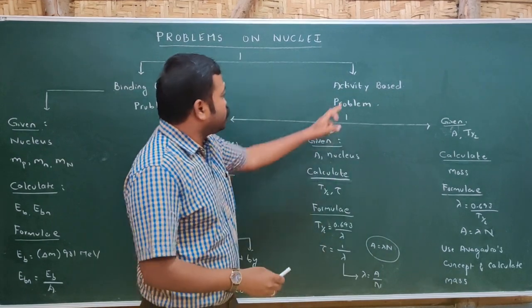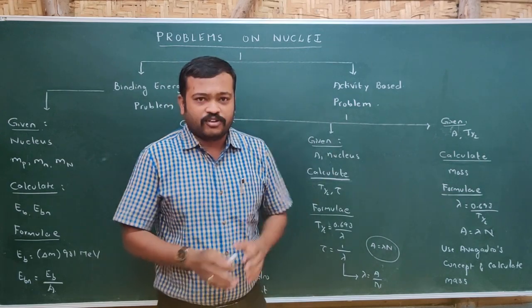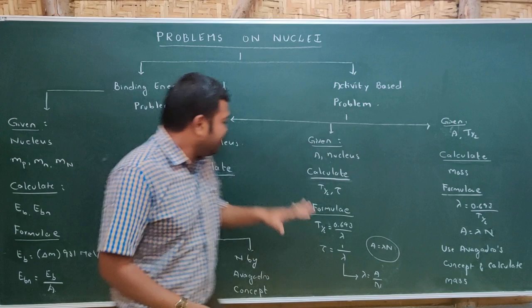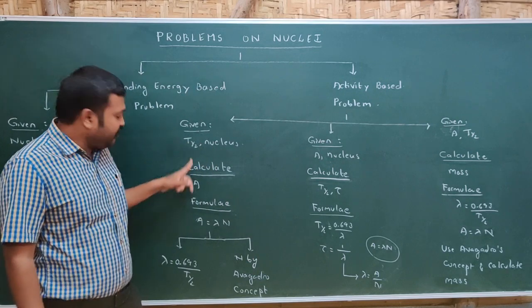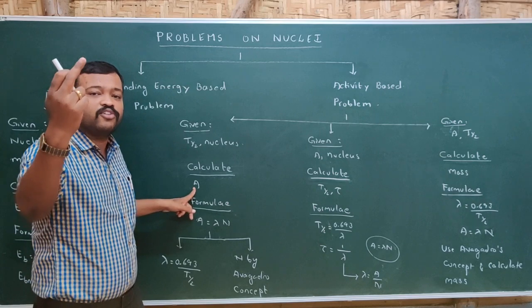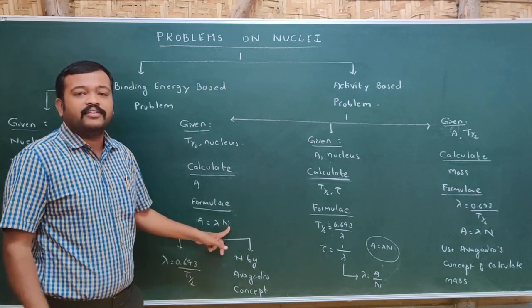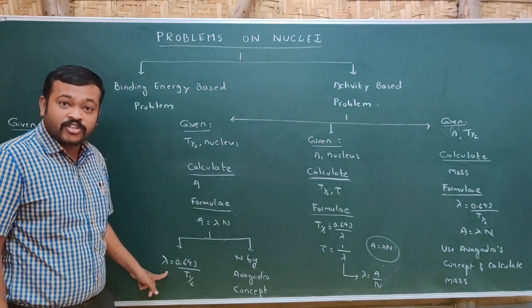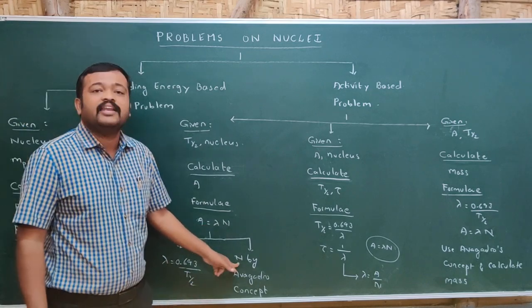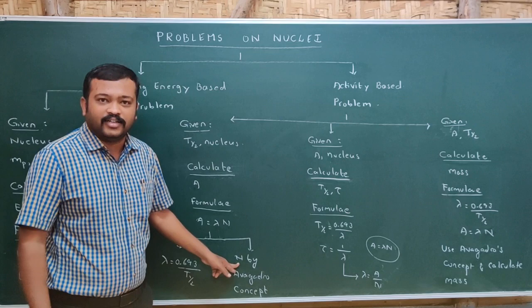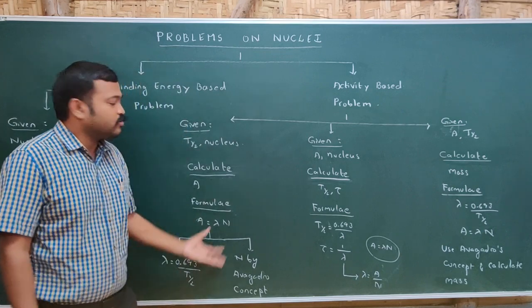Let us go with the second type of problems — activity based problems. In the first type, the question will ask you to calculate activity itself. The nucleus and its half-life will be given. The formula for activity is A = λN. First calculate λ using 0.693 divided by T-half, then calculate N (number of nuclei) using Avogadro's concept, and multiply to get activity.